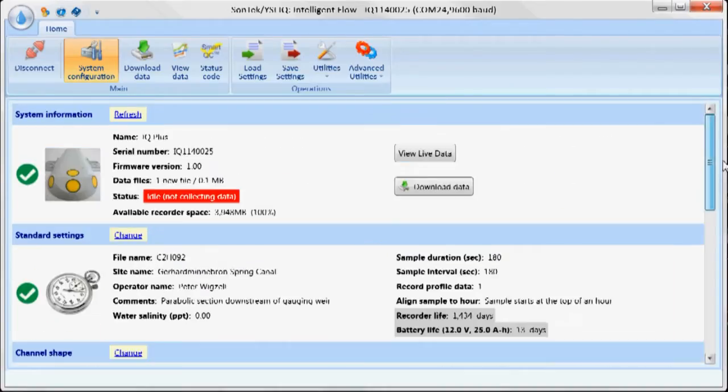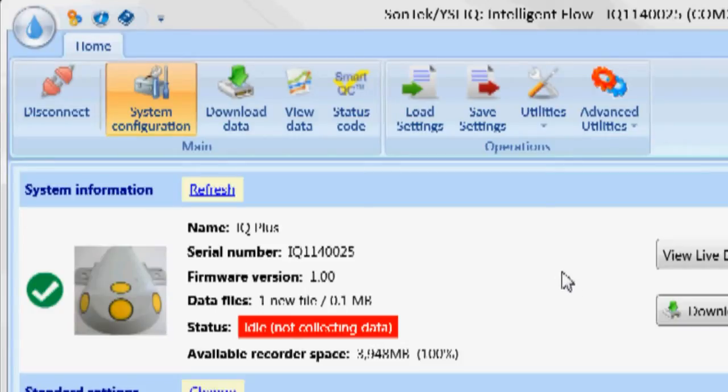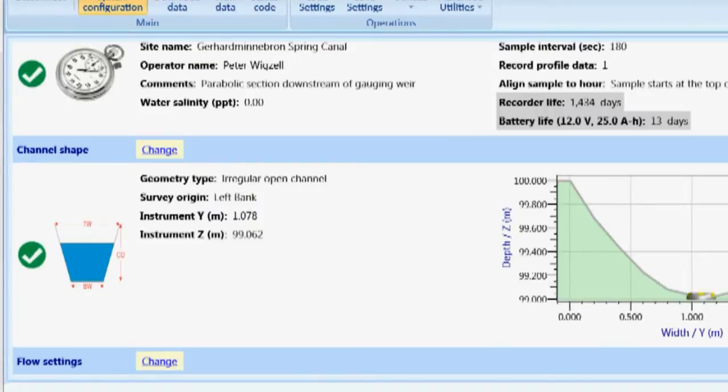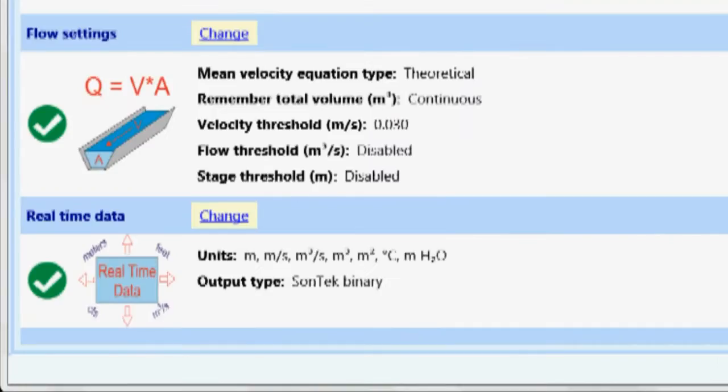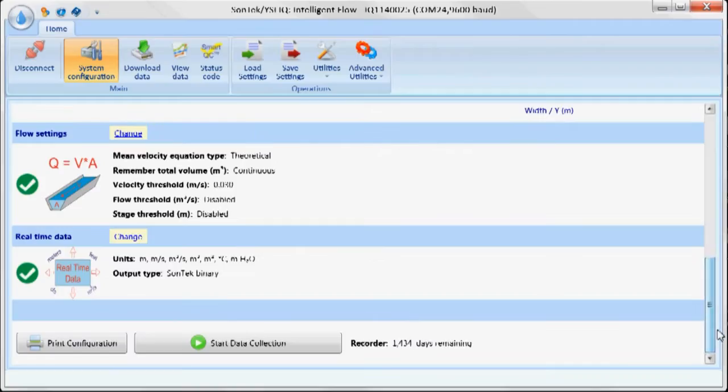Once I've connected to the instrument, it's going to come up with this page. What I can see here is I have system information, the standard settings, the channel shape, the flow settings, and my real-time data settings.